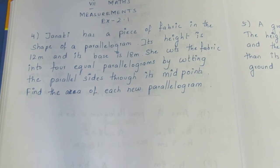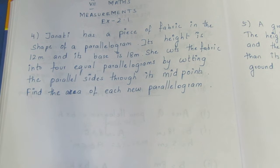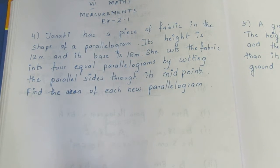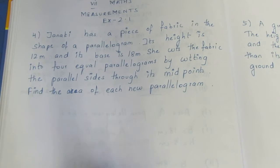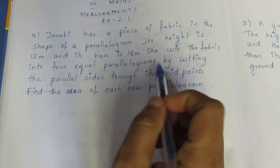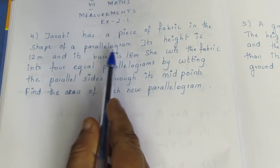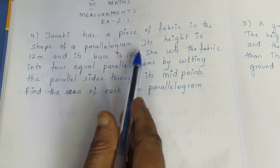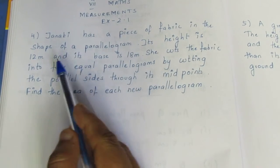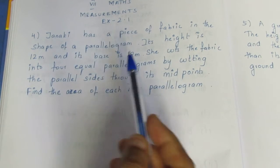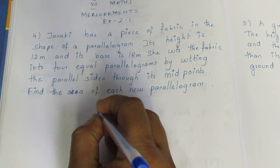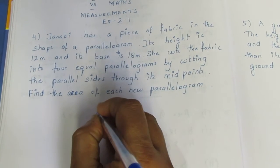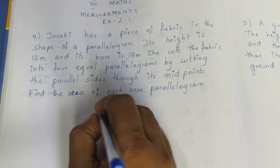Question: Janaki has a piece of fabric in the shape of a parallelogram. The parallelogram-shaped fabric has a height of 12 metres and a base of 18 metres. Let us draw a rough diagram.